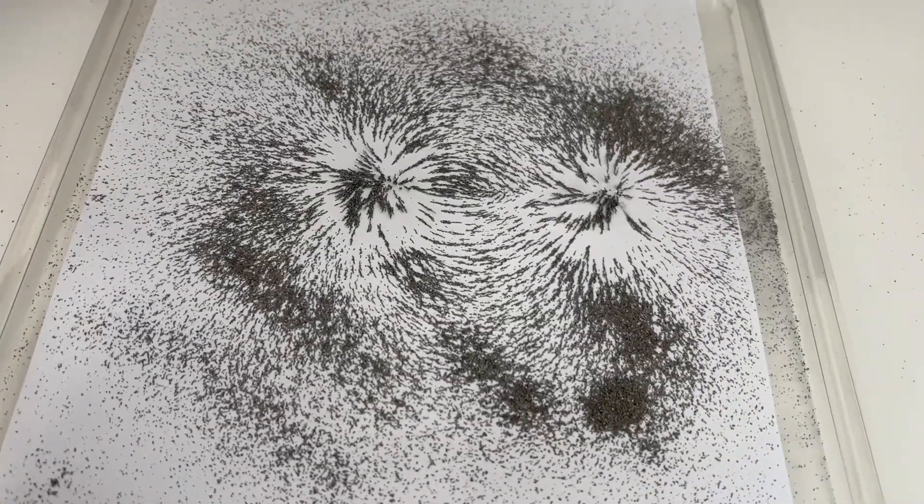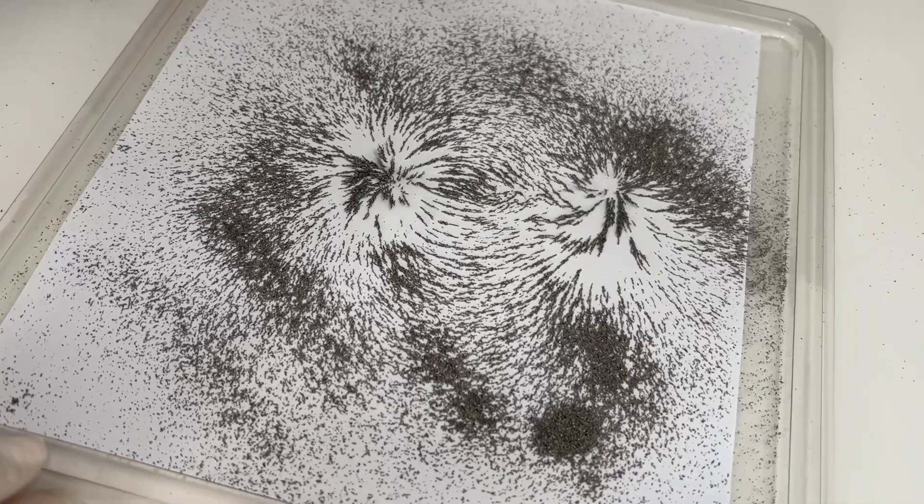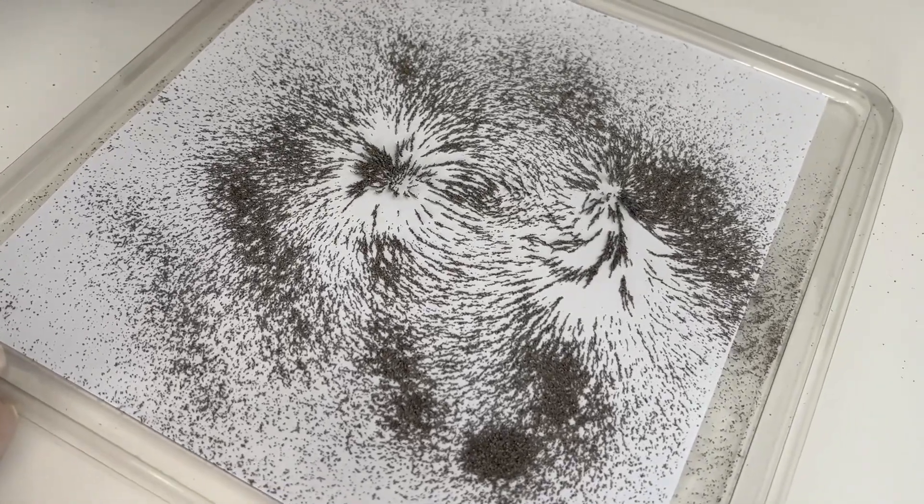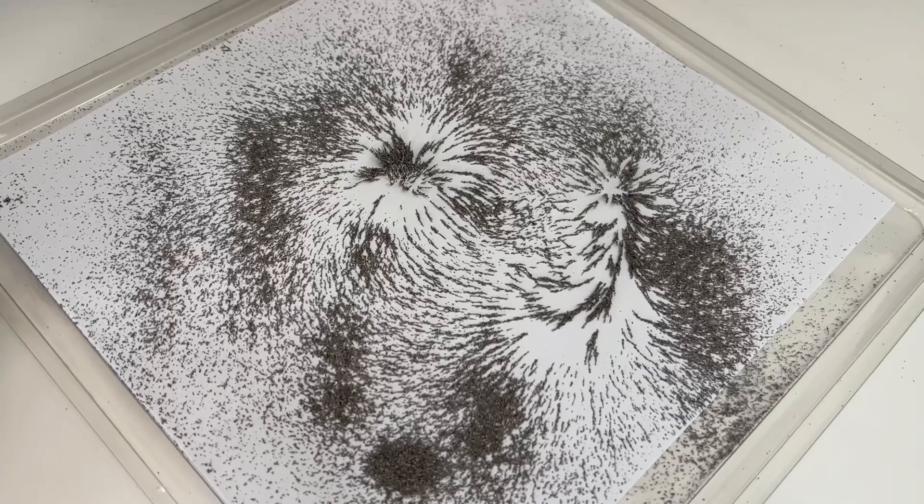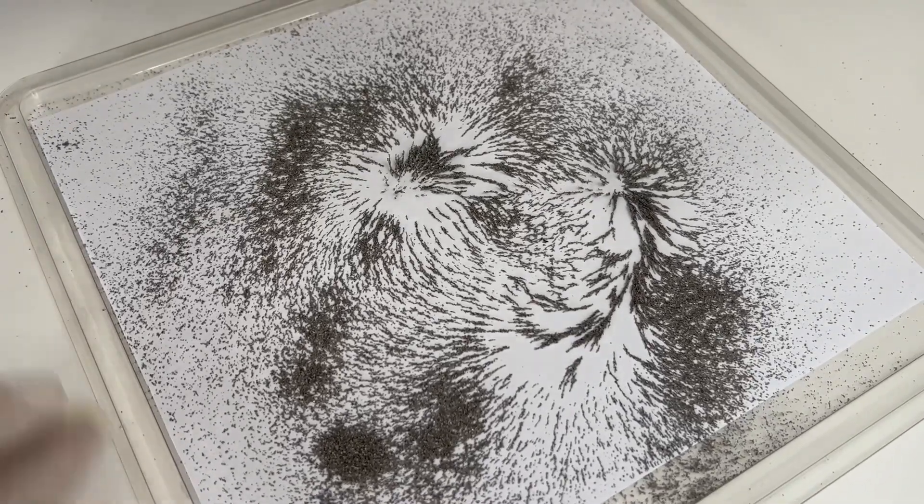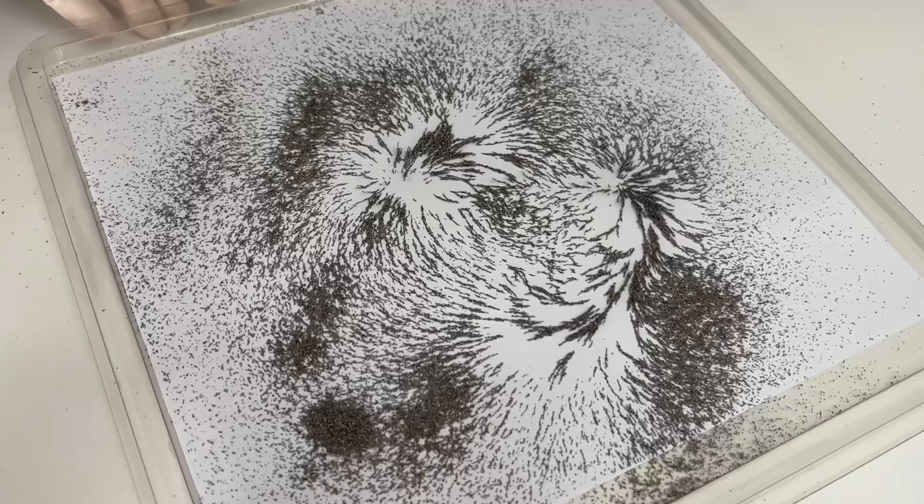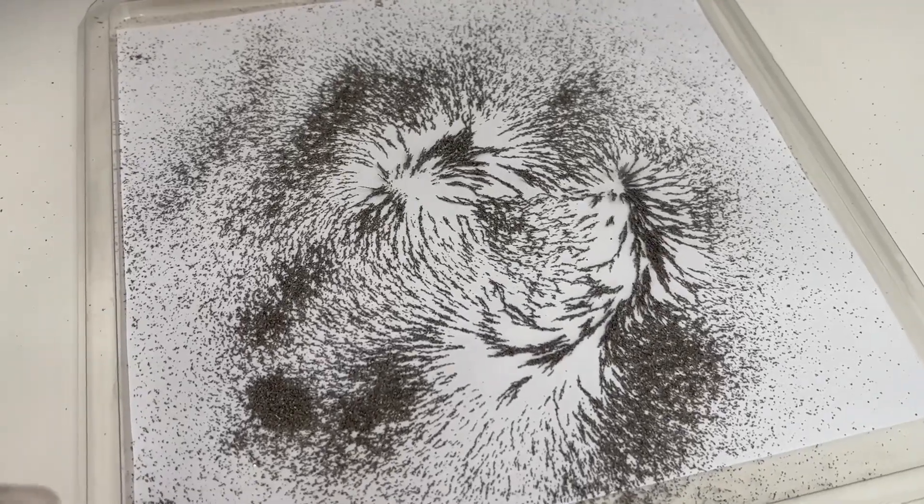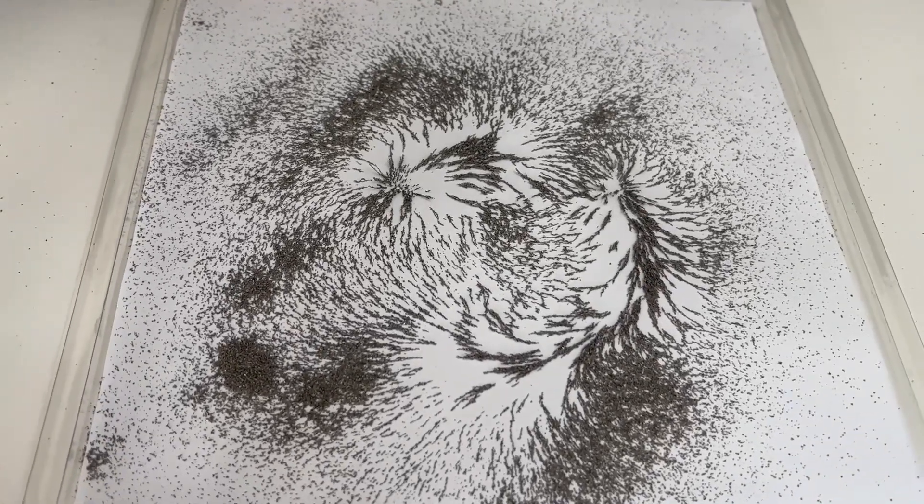Now let's see what happens when I rotate the plastic tray. As I turn the plastic tray, the iron filings move and shift to match the new direction of magnetic field. It's an amazing way to see how magnetic forces flow.